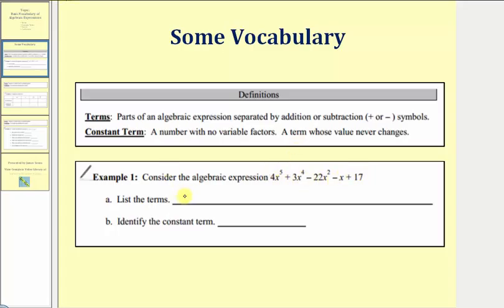The first term is four x to the fifth. We'll separate the terms with commas. The second term, because we have plus three x to the fourth, is positive three x to the fourth. Notice how for the third term, we have minus 22 x squared. Remember, minus 22 x squared is equivalent to plus negative 22 x squared, so because of the subtraction, the third term is negative 22 x squared.